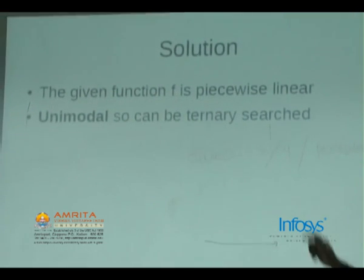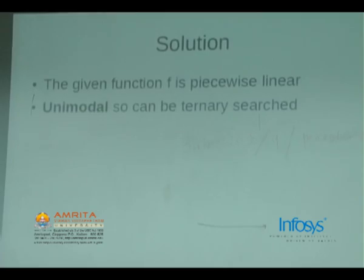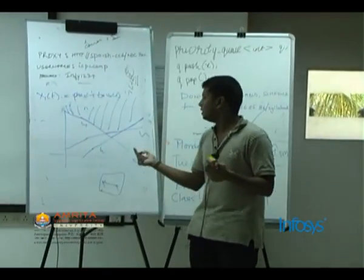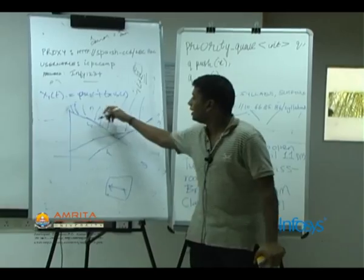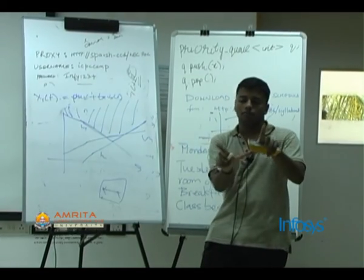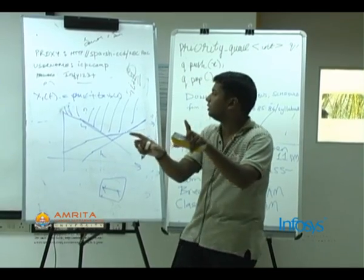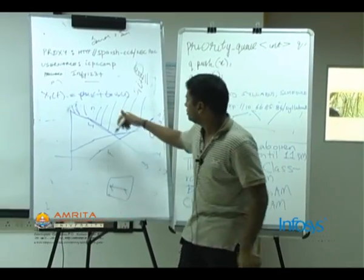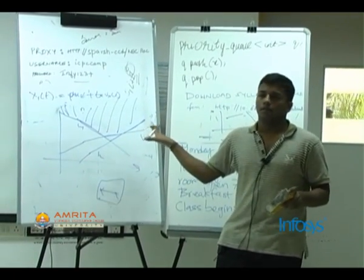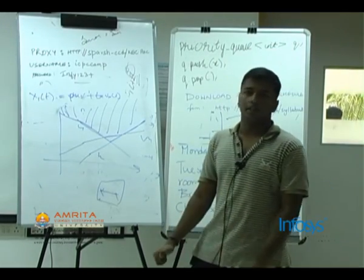Another mathematical way of defining this function is that it is piecewise linear. A piecewise linear function is a function made of lines, where at all the intersection points the slope changes. Is the diagram clear?